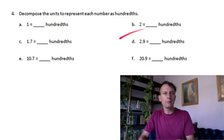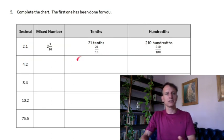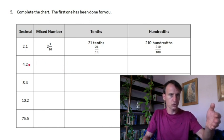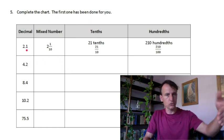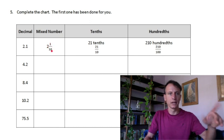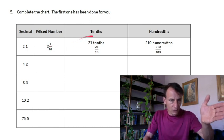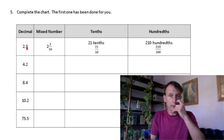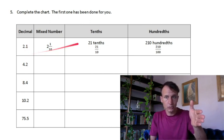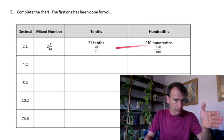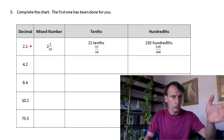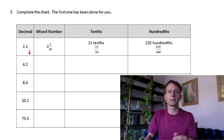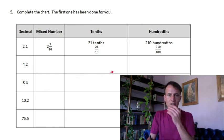In the chart, you're doing something very similar. Take the decimal two and one tenth — mixed number. For tenths: 21 tenths. Read as a number, 21, what place? Tenths. For 210 hundredths: write a zero — 210 — what place? Hundredths. Same approach with the rest in fraction form as well.